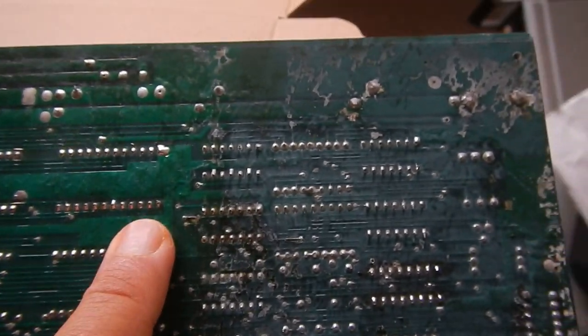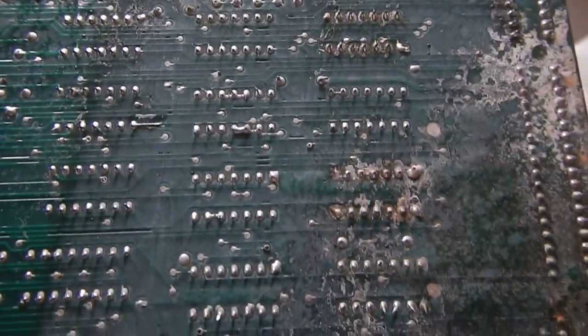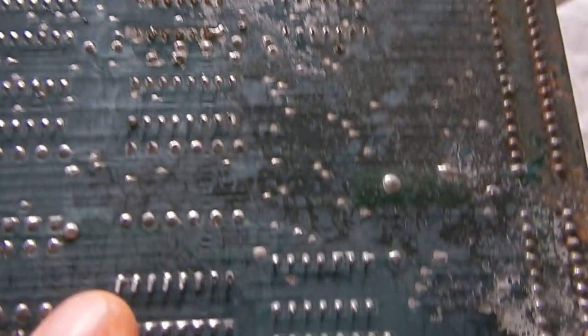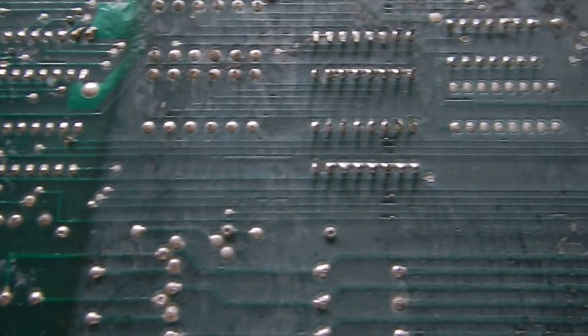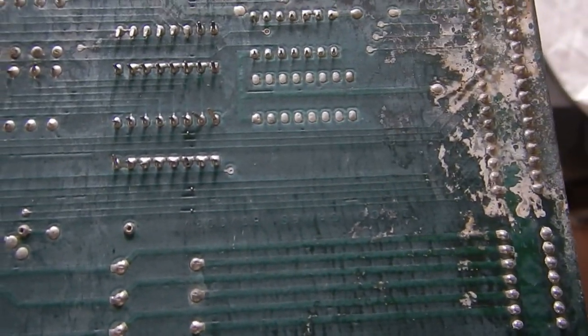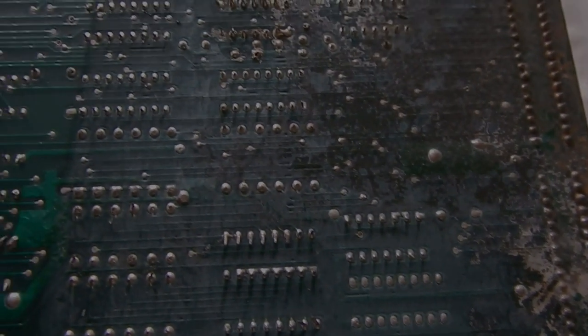This PCB must have been stored in a very damp place or got partly flooded. I will try to clean the residues the best I can. This is how the board looks like after quite some brushing with isopropyl alcohol. I hope no traces got really damaged under the solder mask.